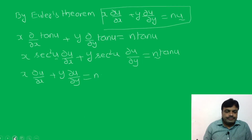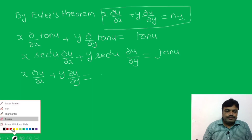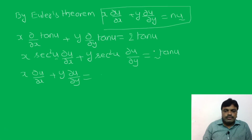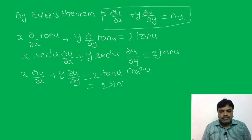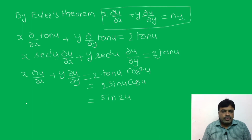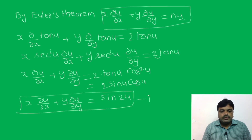So 2·tan u·cos²u = 2·(sin u/cos u)·cos²u = 2·sin u·cos u = sin 2u. Therefore x·∂u/∂x + y·∂u/∂y = sin 2u. This is equation (1). Now we are finding x²∂²u/∂x² + 2xy·∂²u/∂x∂y + y²∂²u/∂y².